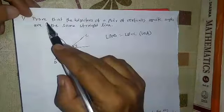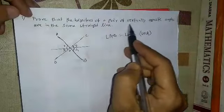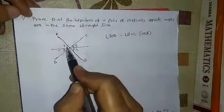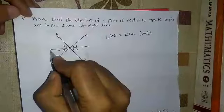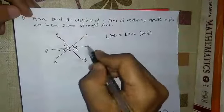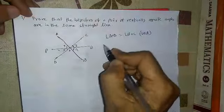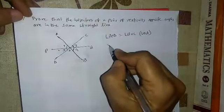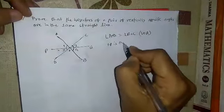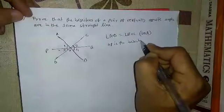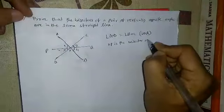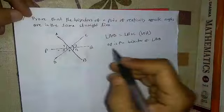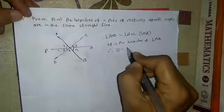The question is: prove that the bisectors of a pair of vertically opposite angles. So this is the bisector. That means angle 1 equals angle 2. AO is the bisector of angle AOD. Therefore, angle 1 equals angle 2.